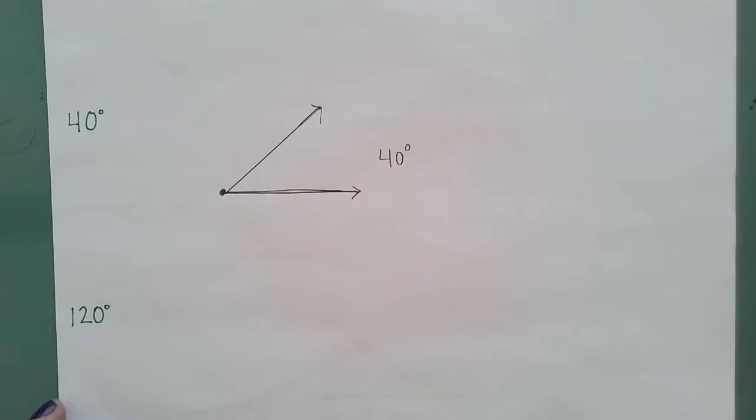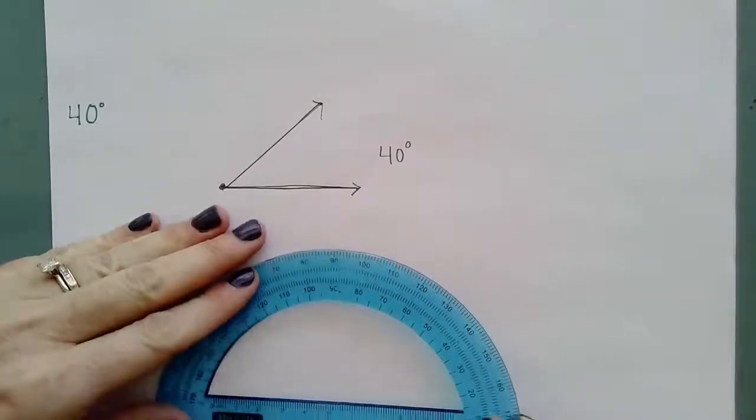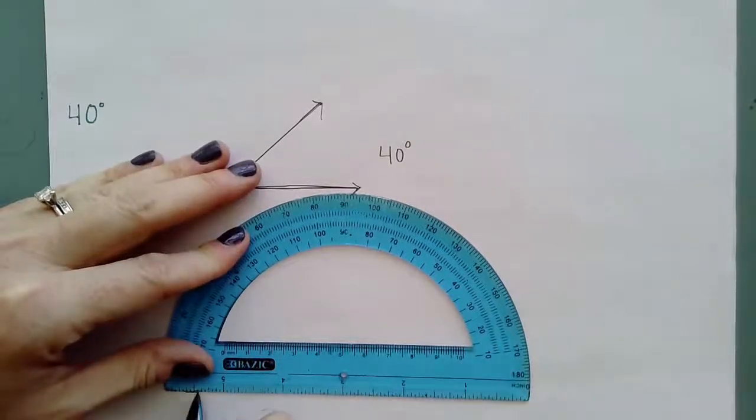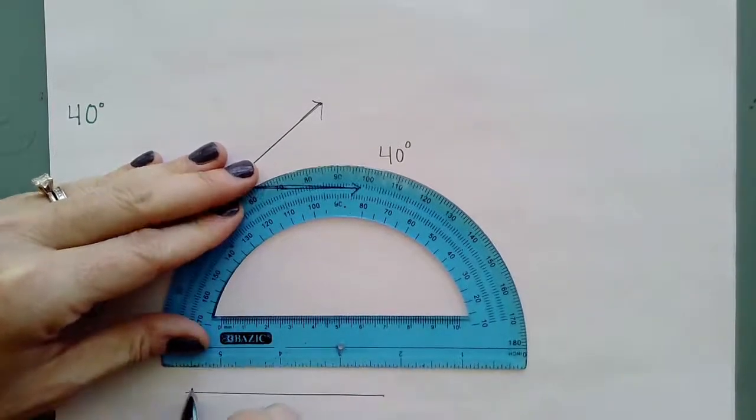So for our last angle here, we're going to measure one that is 120. So again, I know that 120 is going to be greater than 90 degrees. So I'm just going to start by drawing a straight line here, which is then going to be made into a ray.